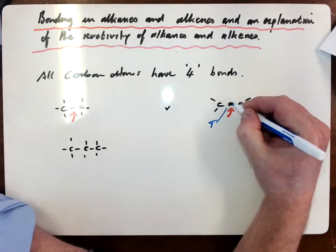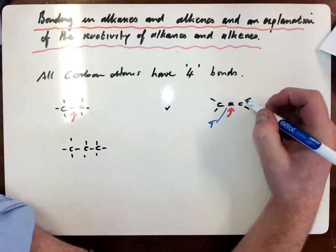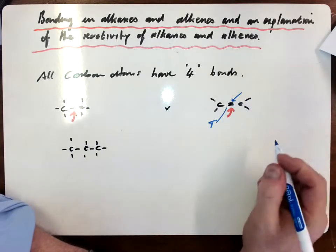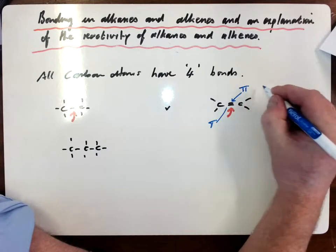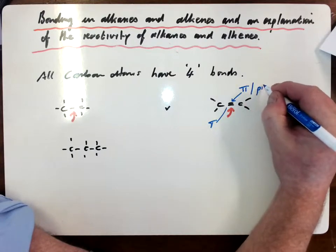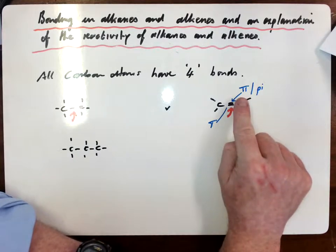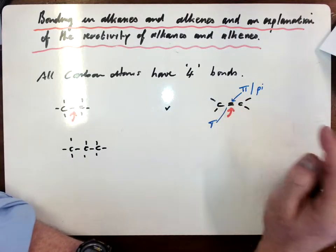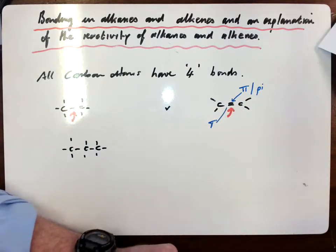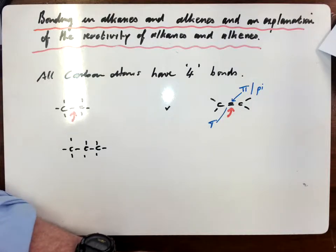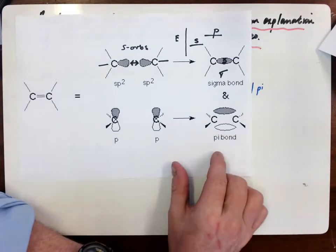And despite the fact that we just draw them as two straight lines and they look identical, the other bond is actually different and is referred to as a pi bond. And we'll look now at how this pi bond forms in alkenes between the two carbons and what implications that has for the chemical reactivity of alkenes.